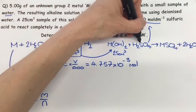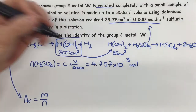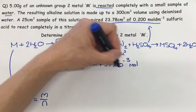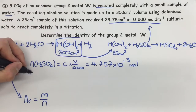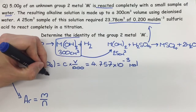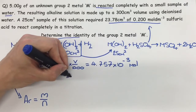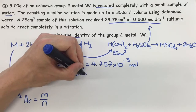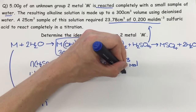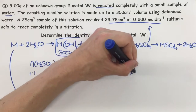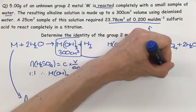Now the ratio of sulfuric acid to our group 2 metal hydroxide is 1 to 1. So therefore this is also the number of moles of M(OH)₂ in 25 cm³. Therefore, moles of M(OH)₂ in 25 cm³ equals 4.757 × 10⁻³ mol.